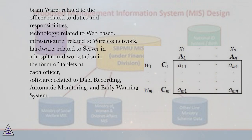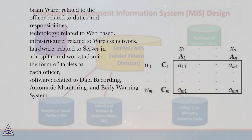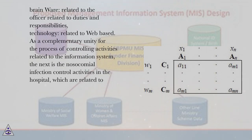Technology is related to web-based systems. As a complementary unity for the process of controlling activities related to the information system, the components — Infrastructure (wireless network), Hardware (server and tablet workstations), Software (data recording, automatic monitoring, early warning system), Brainware (officer duties and responsibilities), and Technology (web-based) — work together.